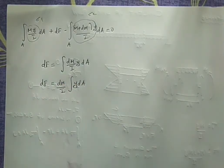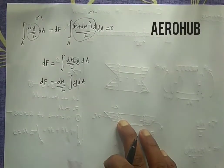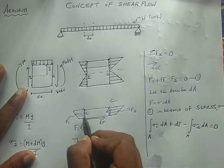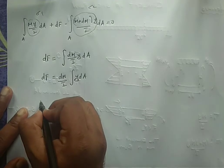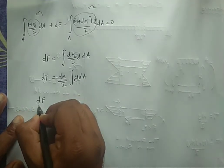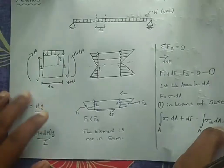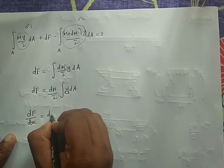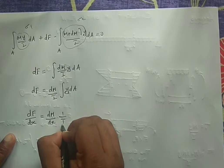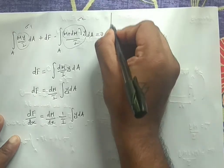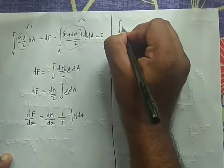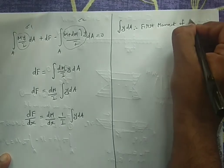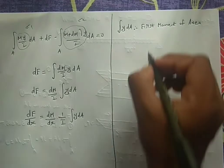dF is the shear force acting parallel to the applied load. Dividing dF by dx gives the shear force per unit length: dF/dx = (dM/dx) · (1/I) · ∫y dA. From the last lecture, we derived that the rate of change of bending moment equals shear force, so dM/dx = V. Also, from strength of materials, ∫y dA is the first moment of area, denoted by Q.